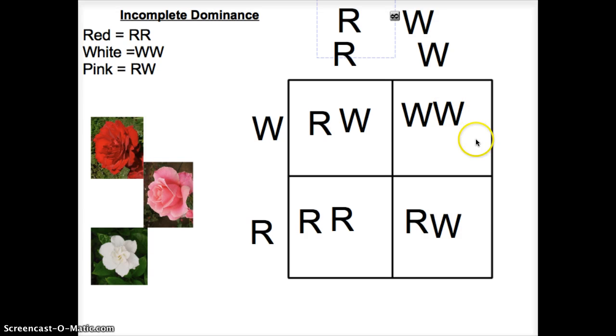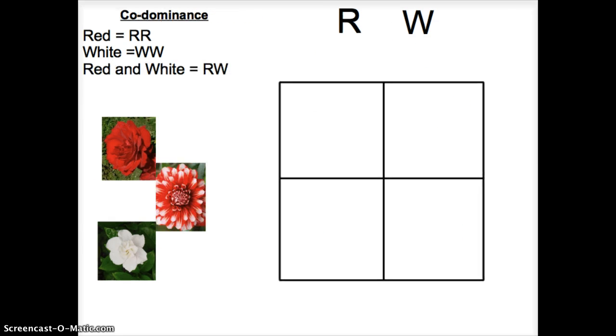And co-dominance, you're going to see, is pretty much the same thing. The only difference here is instead of a red flower and a white flower coming together to blend together, co-dominance, essentially they coexist, you get a red and white flower. So both traits are exhibited as opposed to blending together. But how you do it is still exactly the same as you would with incomplete dominance.